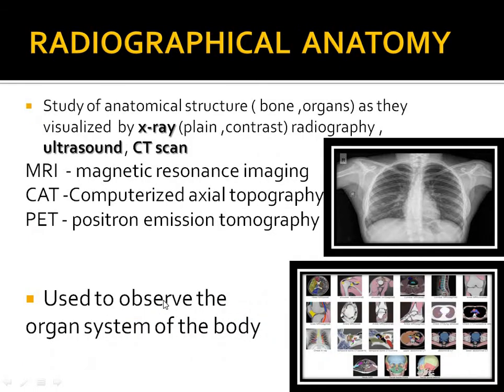Radiographic anatomy is the study of structures with the help of X-ray, ultrasound, CT, or any imaging modality. It covers the study of anatomical structures such as bones and organs as visualized by X-ray, ultrasound, CT, MRI, CAT, or PET. MRI means magnetic resonance imaging, CAT means computerized axial tomography, and PET means positron emission tomography. These are useful for observing the organ systems of the body.